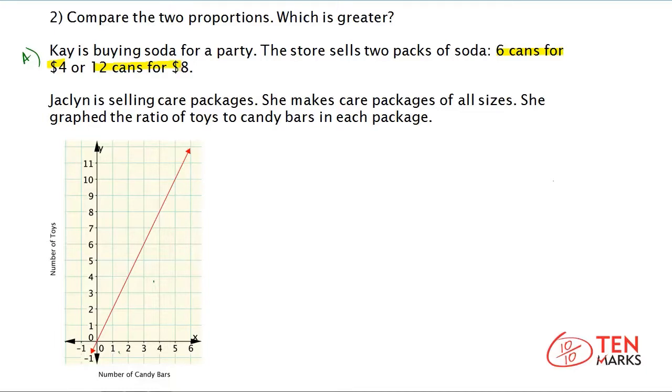Let's find the proportion here first. And you can write the different pack options as ordered pairs. So think about it this way. The number of cans will be x, and the amount of money you spend is y. So six cans for $4.00.